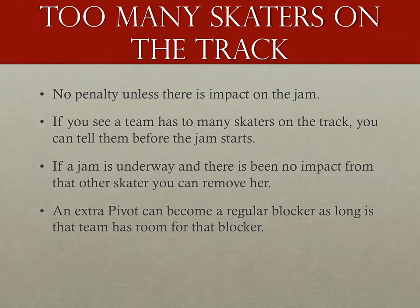Another common issue is too many skaters on the track. Previously, we'd have to wait for the jam to start and then tell the extra skater to leave. Now that it's not a penalty unless there's impact upon the jam, it's perfectly okay to inform the team before the jam starts that they have an extra skater. Even if the jam is underway, if you can get that extra skater off the track without major impact upon the jam, do so. If there is major impact, call the jam and issue the penalty to the extra skater.